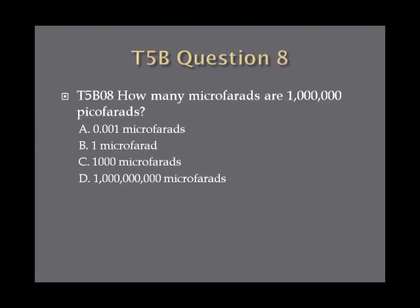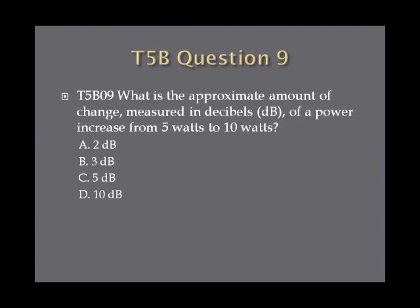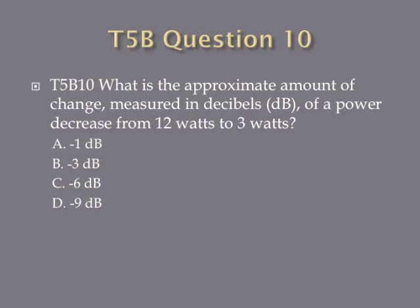Question 8: How many microfarads are 1,000,000 picofarads? A) 0.001 microfarads, B) 1 microfarad, C) 1,000 microfarads, or D) 1,000,000,000 microfarads? Question 9: What is the approximate change in decibels of a power increase from 5 watts to 10 watts? A) 2 decibels, B) 3 decibels, C) 5 decibels, or D) 10 decibels? Question 10: What is the approximate change in decibels of a power decrease from 12 watts to 3 watts? A) −1 decibel, B) −3 decibels, C) −6 decibels, or D) −9 decibels?